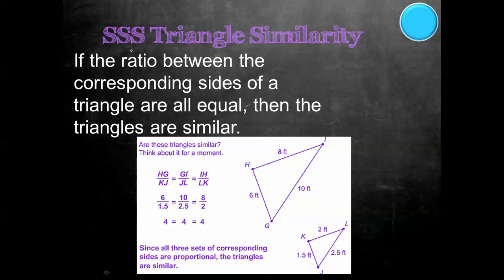Another postulate we use is the side-side-side triangle similarity postulate. Now, this one is different — you don't want to confuse it with congruent triangles. Side-side-side triangle similarity says that if the ratio between the corresponding sides of a triangle are equal, then the triangles are similar. So what it's saying is that the sides have to be proportional, not equal.